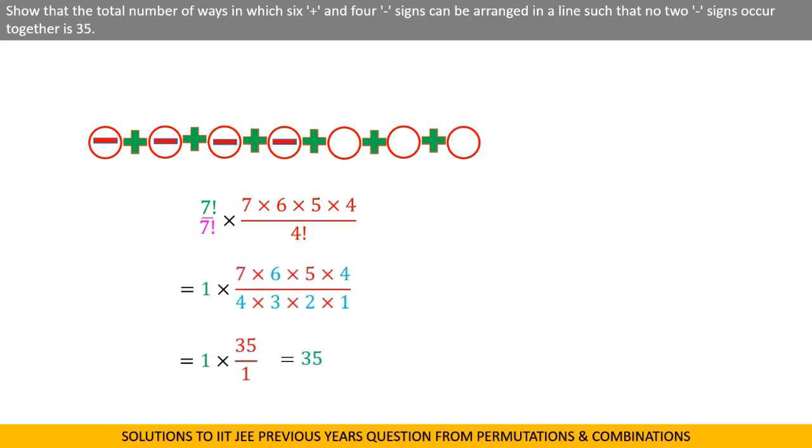Upon multiplying number of ways of arranging both signs, we get our answer, which is 35. I have skipped the calculation part, assuming that you are confident enough to calculate expressions involving factorials.